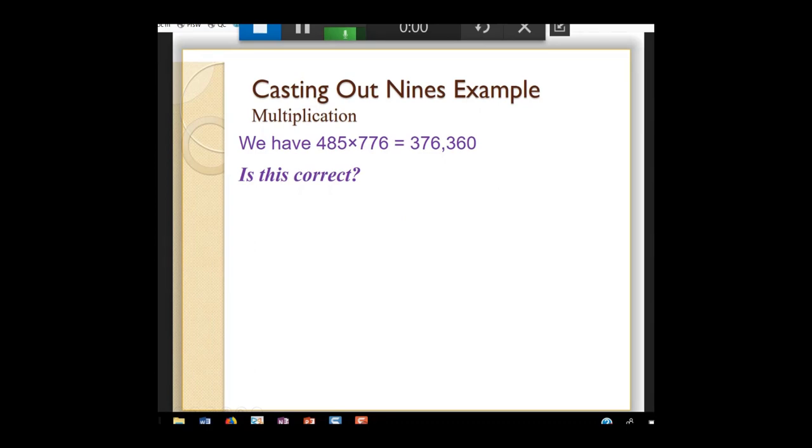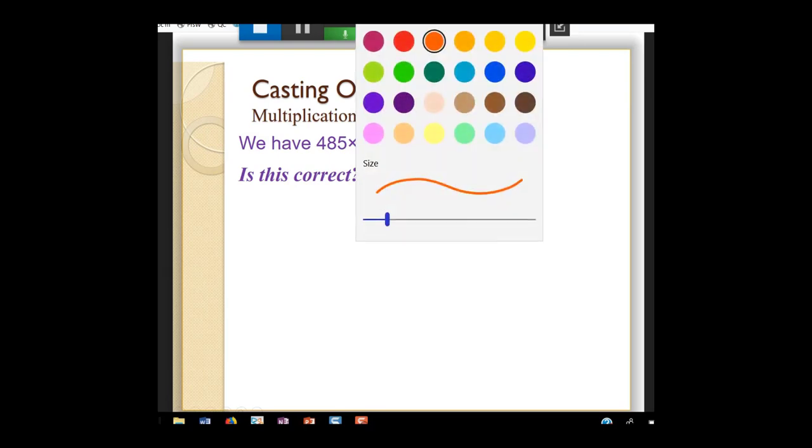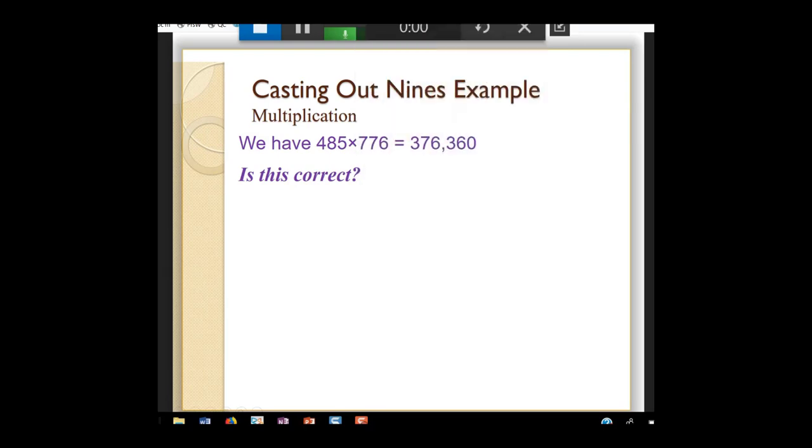I'll take 485, and I'm going to take those digits. 4 and 8 is 12, and 5 is 17. Then I take those digits, 1 and 7, and I get 8.